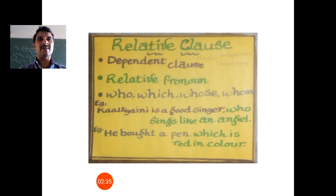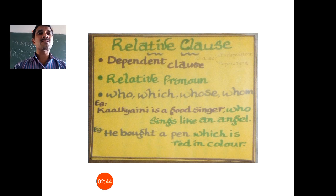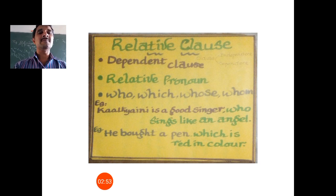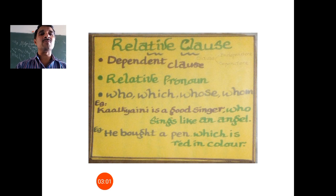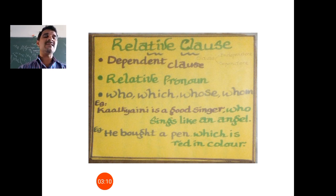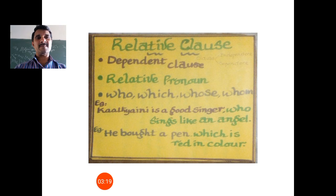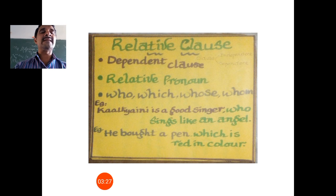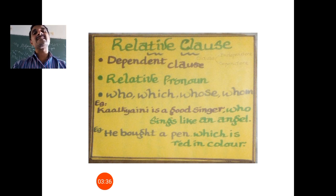Let's see an example: 'Kathiaini is a good singer who sings like an angel.' If you omit the purple-colored part — 'who sings like an angel' — there is no meaning or sense to it. Only when we add 'Kathiaini is a good singer' does 'who sings like an angel' gain its meaning. Here, 'who' is the relative pronoun, and 'who sings like an angel' is the relative clause. Similarly, 'He bought a pen which is red in color' — 'which is red in color' has no identity unless it depends on 'he bought a pen.'